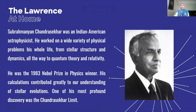Subramanian Chandrasekhar was an Indian-American astrophysicist. He worked on a variety of physical problems his whole life, from stellar structure and dynamics, all the way to quantum theory and relativity. So here we can see that Chandrasekhar is very diverse in what he does, and he's not confined to only one topic or one subject, even within astrophysics. He was the 1983 Nobel Prize in Physics winner, and his calculations contributed greatly to our understanding of stellar evolution. One of his most profound discoveries was the Chandrasekhar limit.